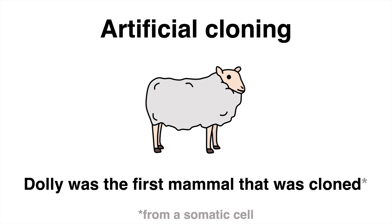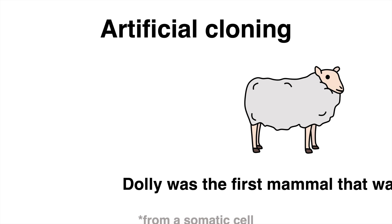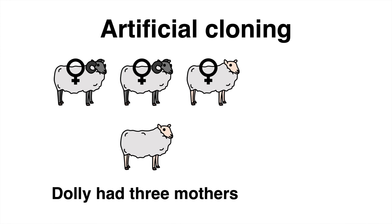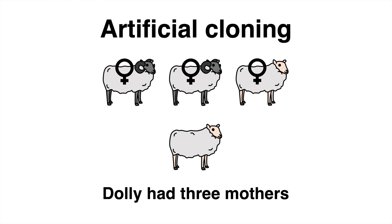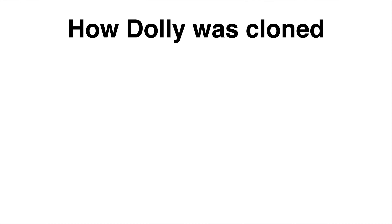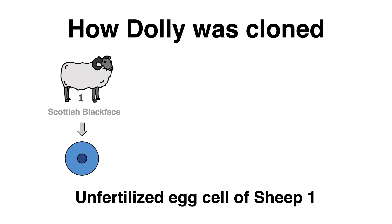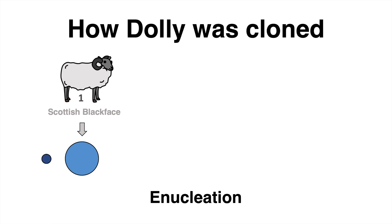Instead of having a father and mother, Dolly had multiple mothers, each with one important function in the cloning process. Sheep 1, a Scottish Blackface, was the egg cell donor. The nucleus was removed so that only the egg cell without any DNA remained.